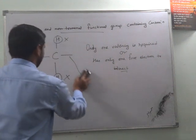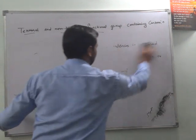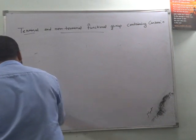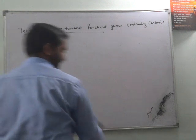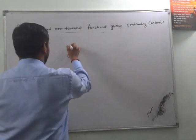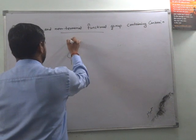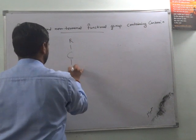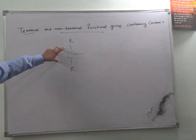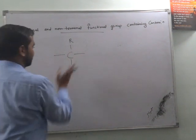Now, if I talk about non-terminal functional groups. Non-terminal functional group, again, as the name suggests, there is no terminating point. If a carbon is occupied by just two sides, like anything, but it is free from both the sides, then it is called non-terminal.